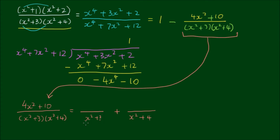For (4x² + 10) over (x² + 3)(x² + 4), we write it as something over (x² + 3) plus something over (x² + 4). Since the denominators are second-degree polynomials, the numerators must be one degree less — linear polynomials. So we write the numerators as (ax + b) and (cx + d). These coefficients are what we need to determine — this is the method of undetermined coefficients.